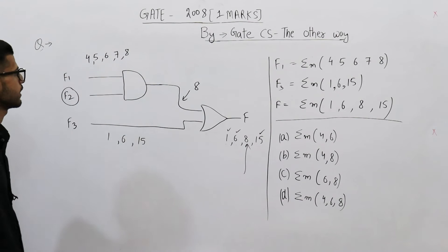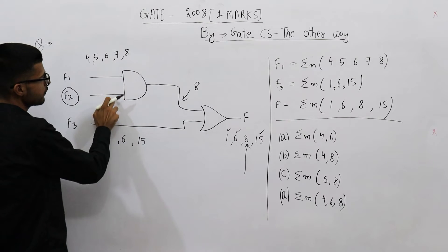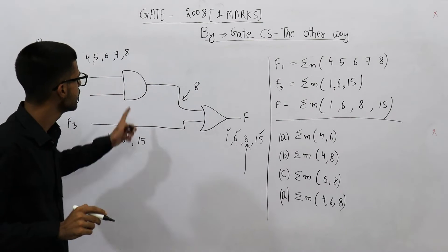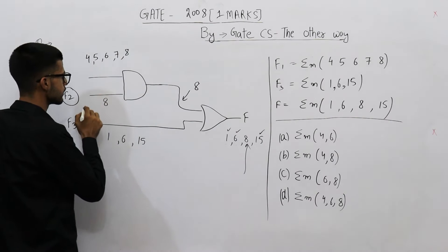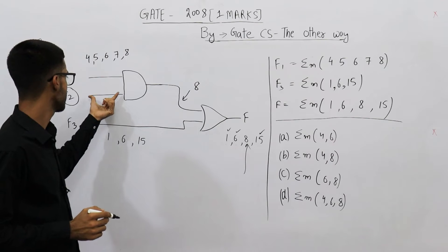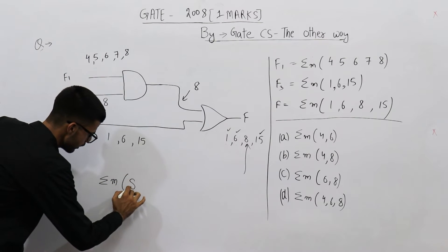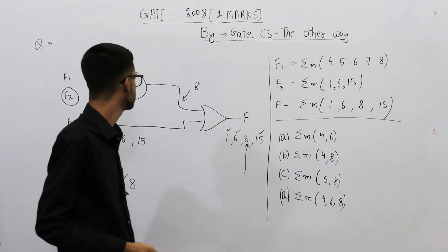Now let's analyze this AND gate. When both of its inputs are high, only in that case it will output high. That means we need to have an 8 here. The function f2 must be sigma m(8). We need at least 8. There could be some more values also.